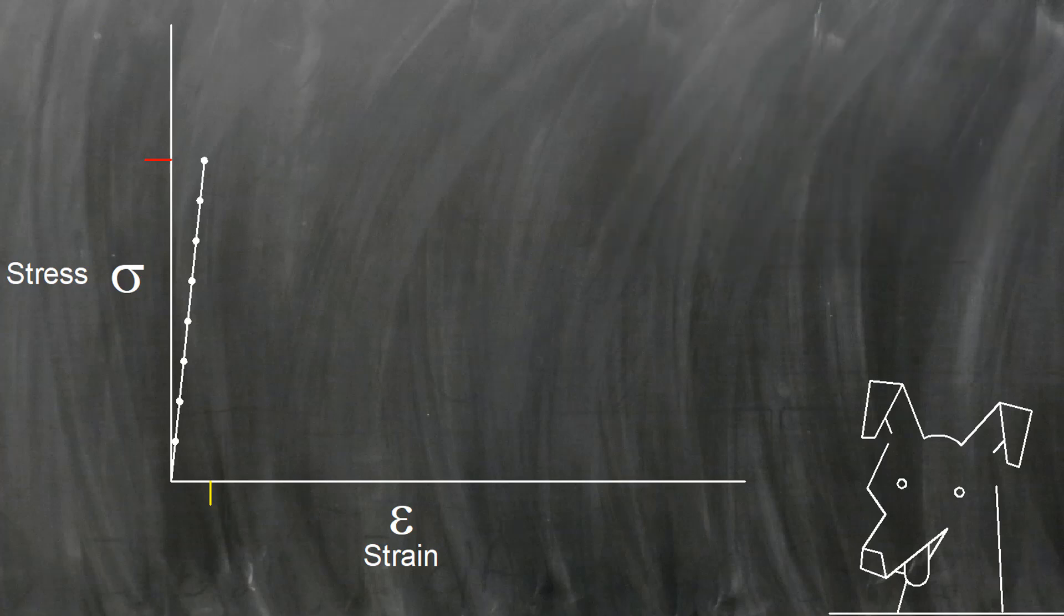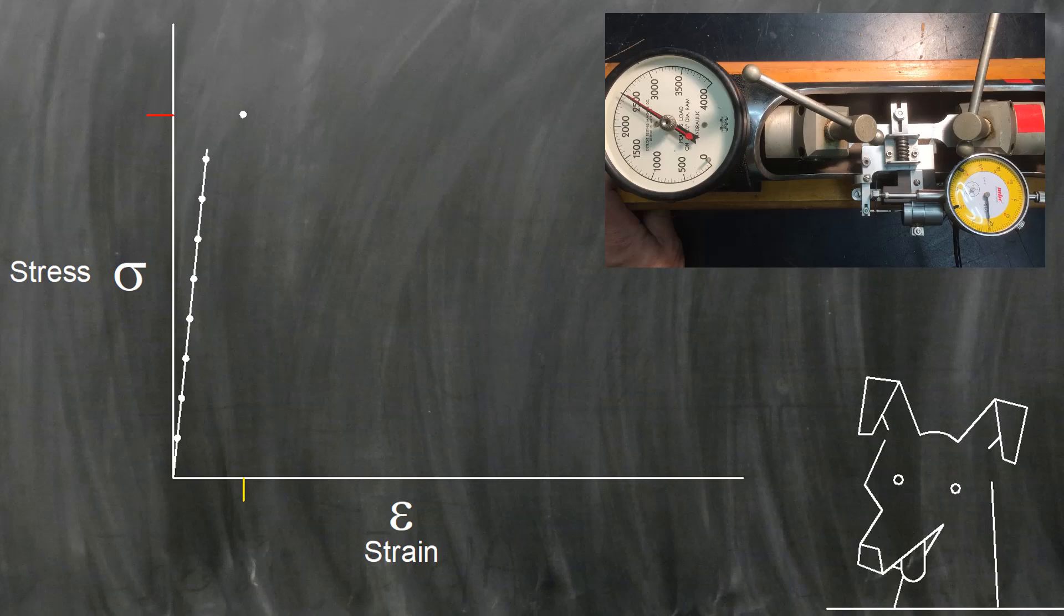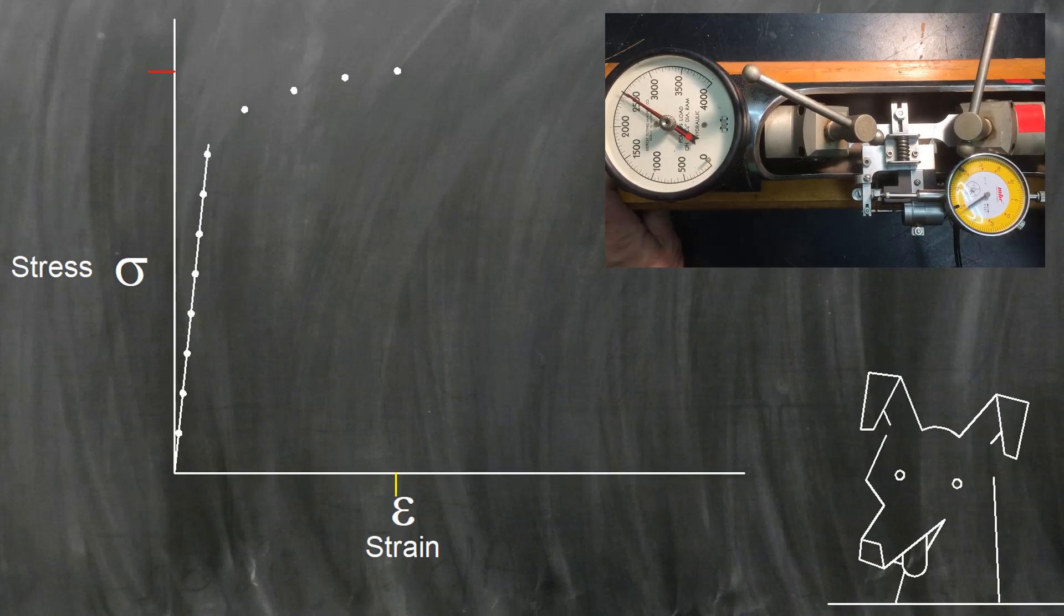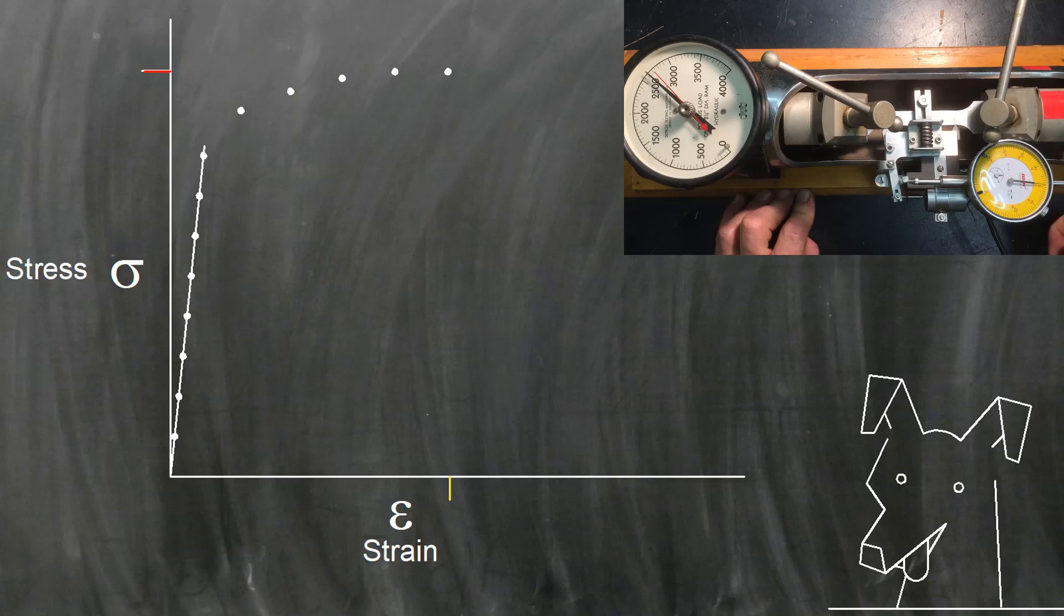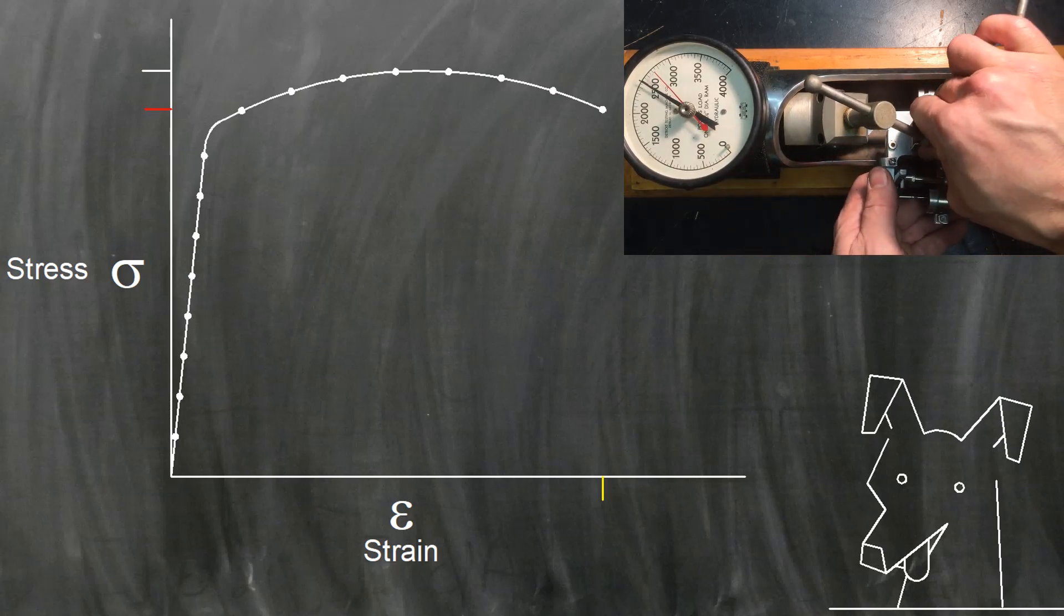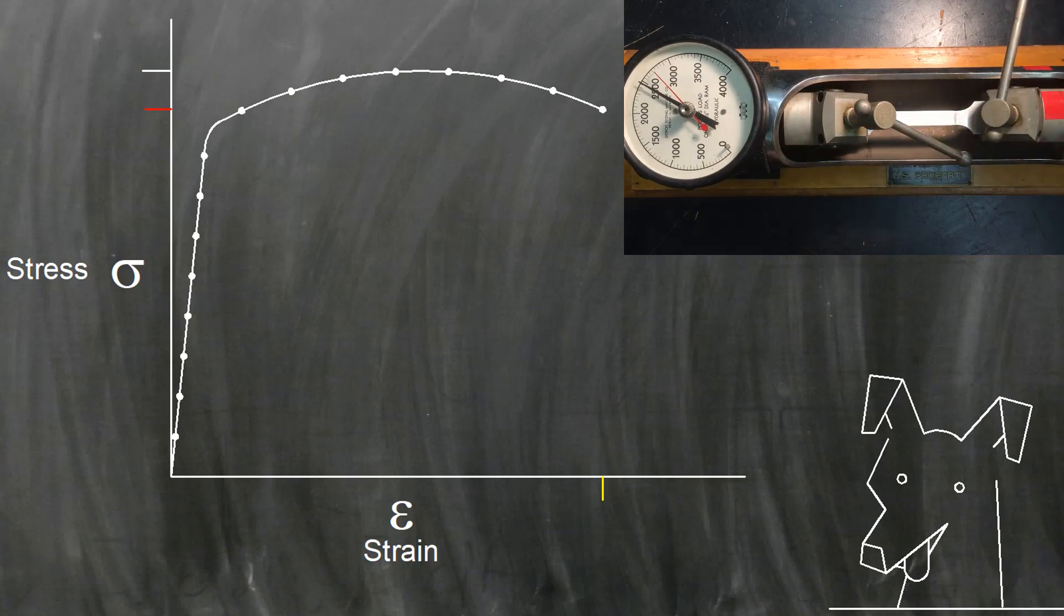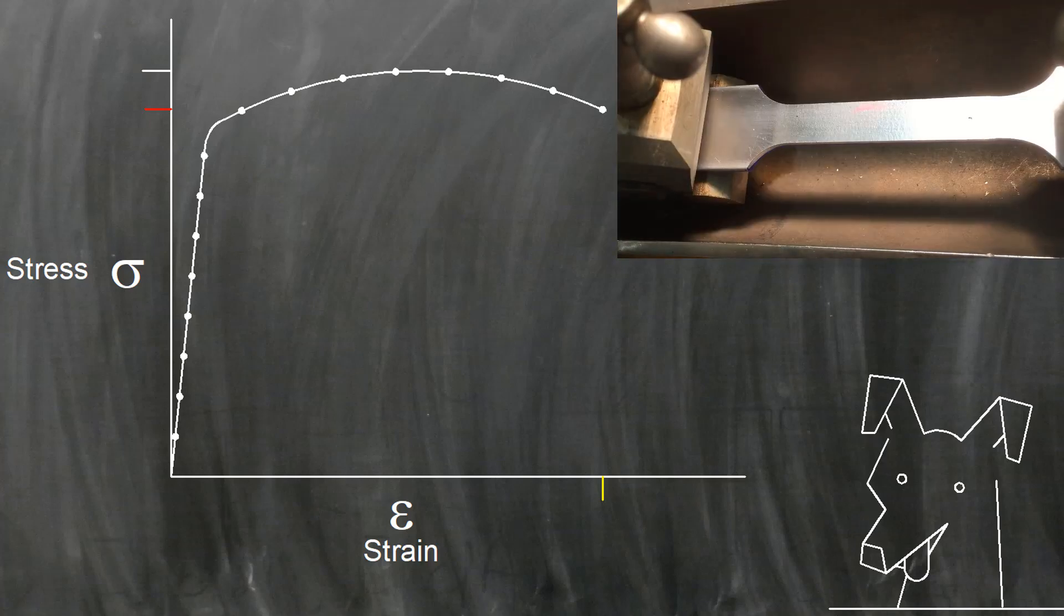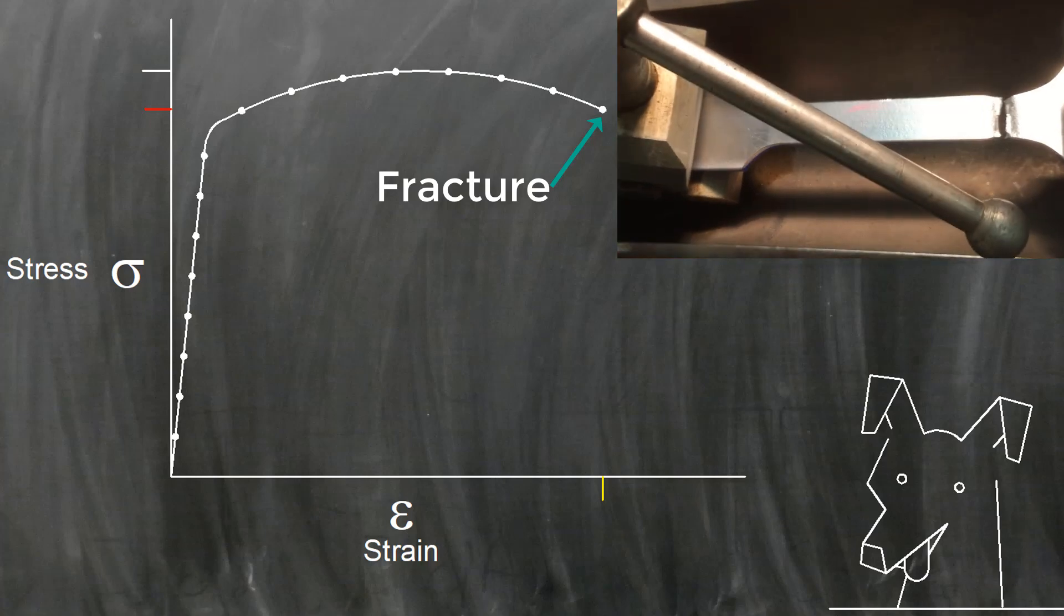But as we kept cranking the parts started stretching but the stress only increased by a small amount. Eventually the stress started dropping and a small neck became visible on the part. We removed the extensometer and kept cranking. The part necked down even more and suddenly broke. That was the end of our test.